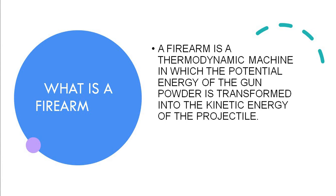In forensic ballistics we basically deal with firearms and ammunition. A firearm is basically any instrument or device that discharges a missile or projectile by the expansion of gaseous forces. Certain gases are formed inside the barrel which push the bullet outside. What happens inside the barrel is that potential energy is converted into kinetic energy, which ultimately leads to the movement of the bullet outside the barrel.